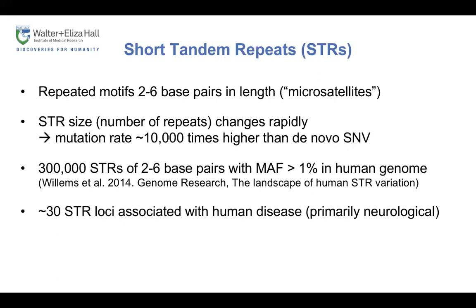Short tandem repeats or STRs are repeated motifs, typically defined as being between two to six base pairs in length, sometimes one to six. These are commonly also known as microsatellites. STRs are highly polymorphic and the number of repeats — which I also refer to as the STR size or repeat size — changes rapidly due to polymerase stutter during DNA replication. Depending on the particular STR loci, the mutation rate can be 10,000 times higher than the rate of de novo single nucleotide variants.